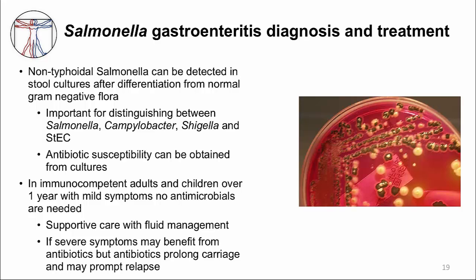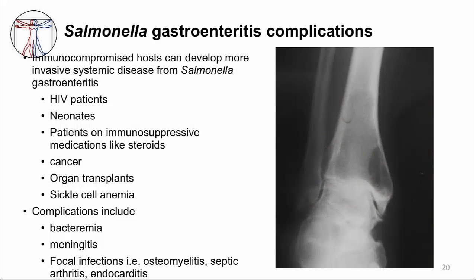In some cases antibiotics are warranted, especially for immunocompromised patients such as HIV patients and infants. These patients can have systemic spread of Salmonella — to the blood (bacteremia), brain (meningitis), bones (osteomyelitis), and other organs. The association between sickle cell anemia and Salmonella bone infection is a classic example worth remembering.